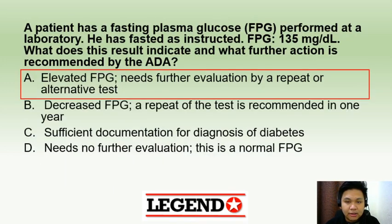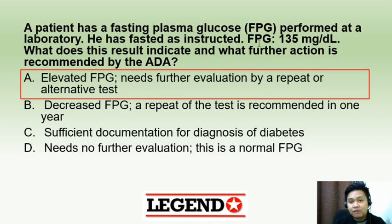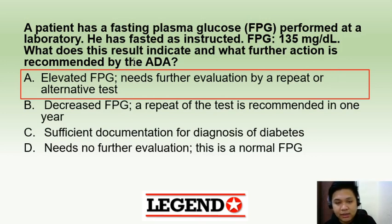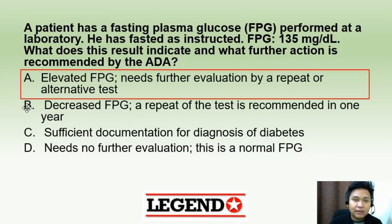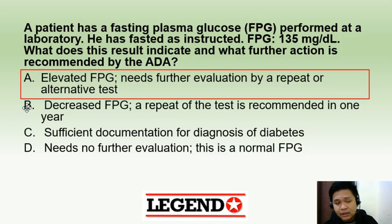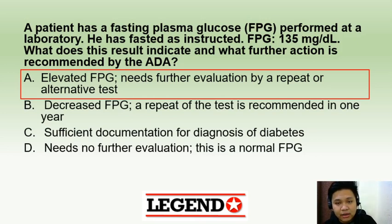A patient has a fasting plasma glucose of 135 mg/dL after fasting as instructed. What does this result indicate? The correct answer is letter A: elevated FPG needs further evaluation by a repeat or alternative test. The ADA recommends that if you get an elevated FPG, you repeat the test on another day. You need at least two elevated FPG results or another confirmatory test to diagnose diabetes mellitus.